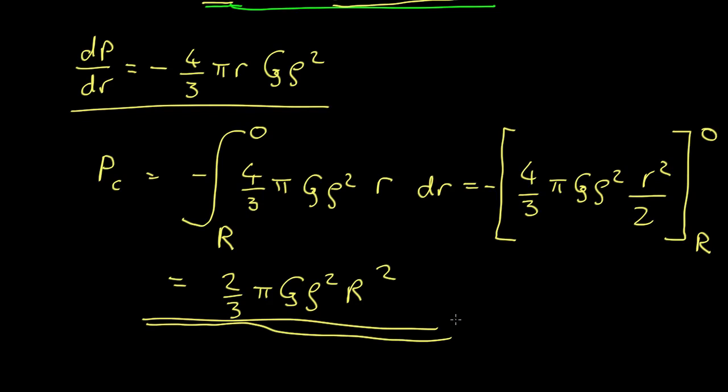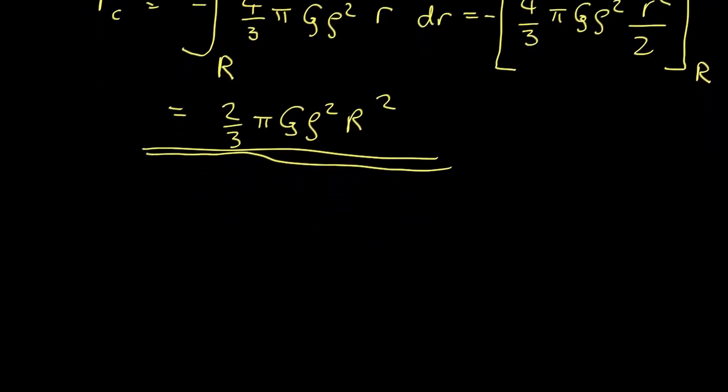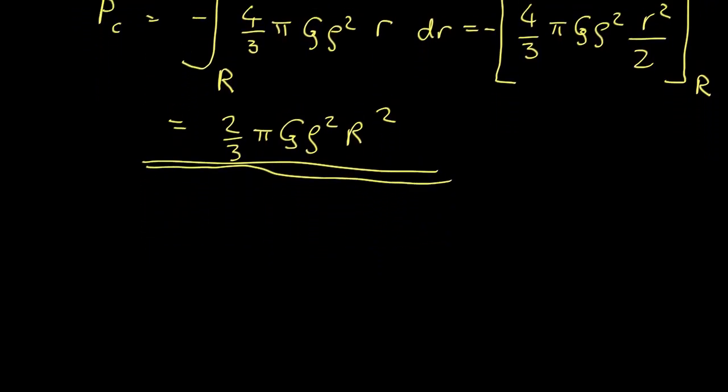But now how do we compare this in the sun to a white dwarf? Well what we can see is the pressure in the center is proportional to the density squared times the radius squared.